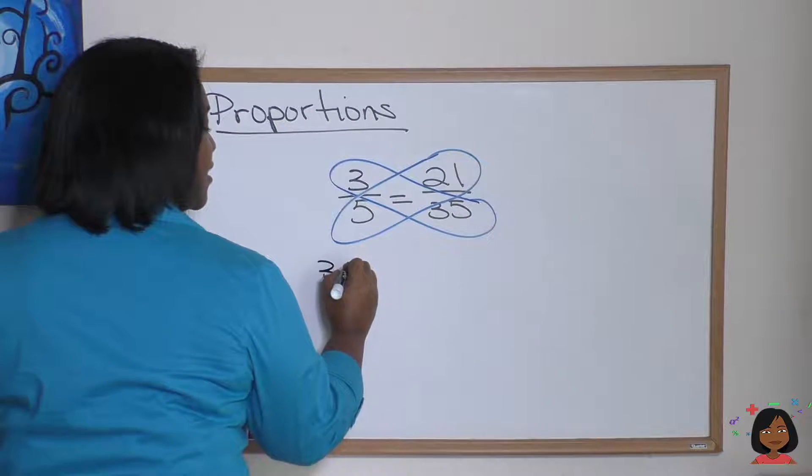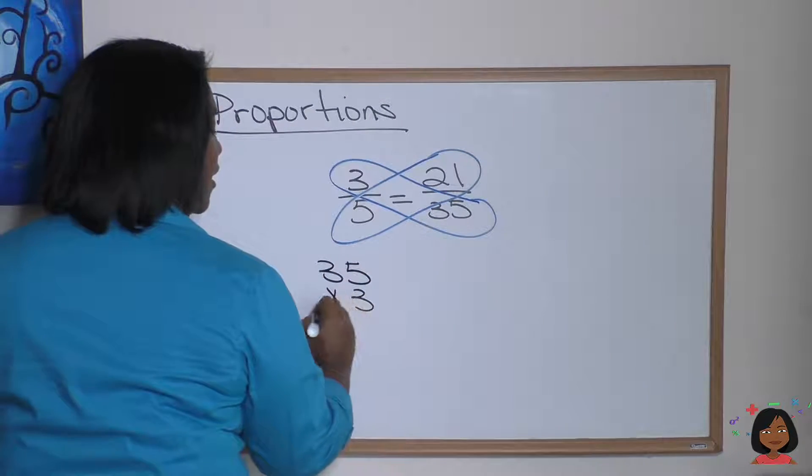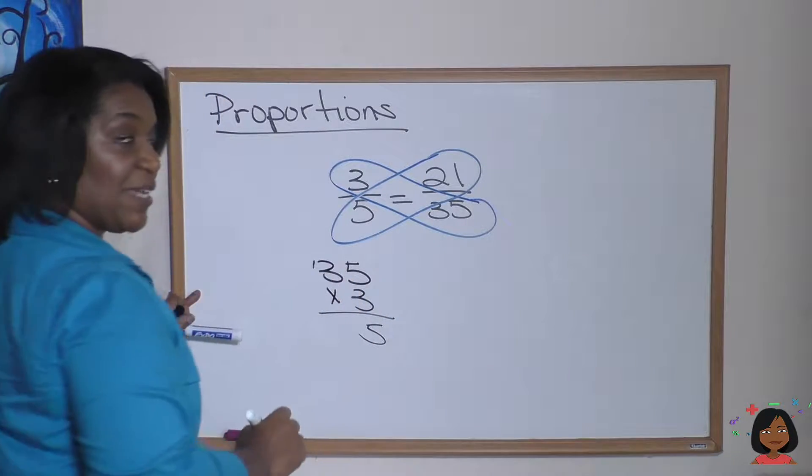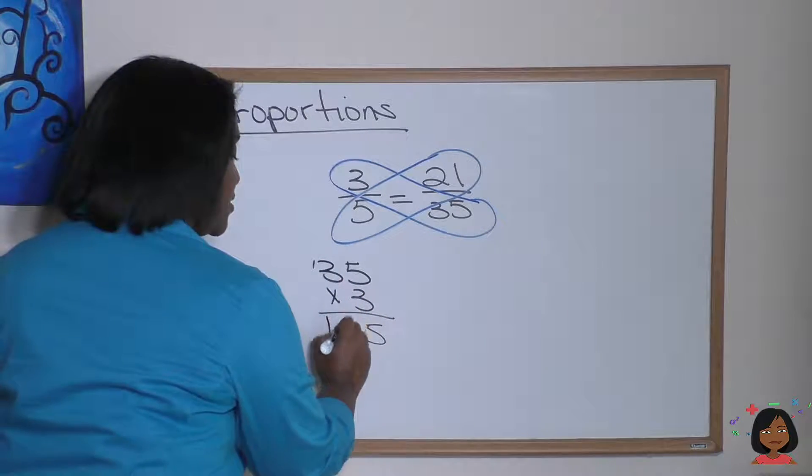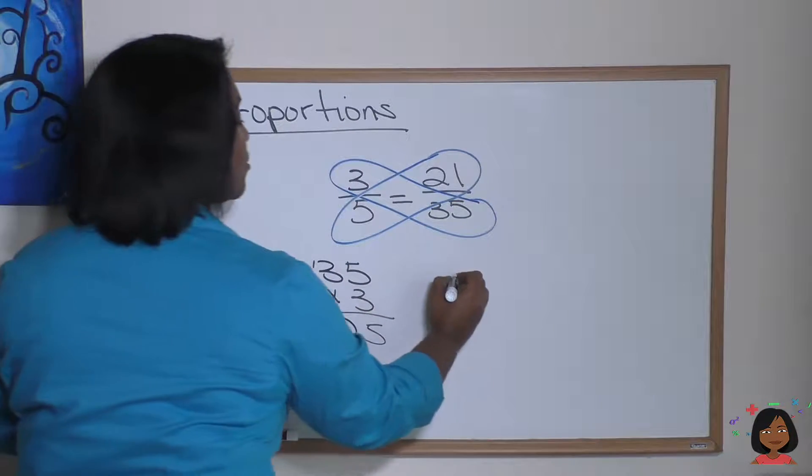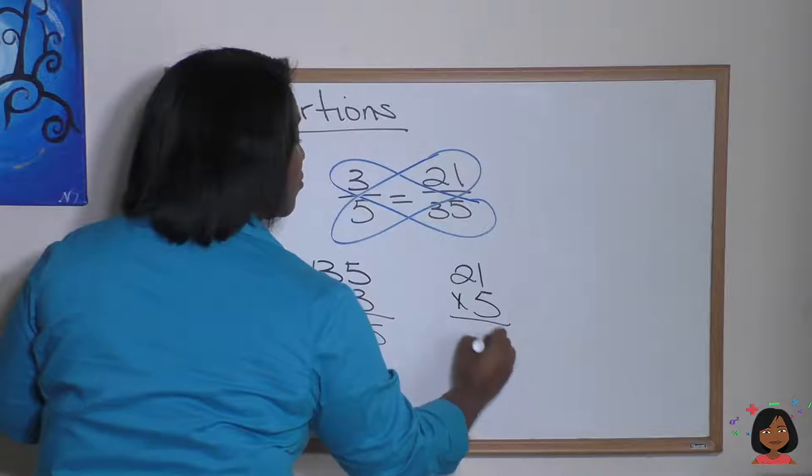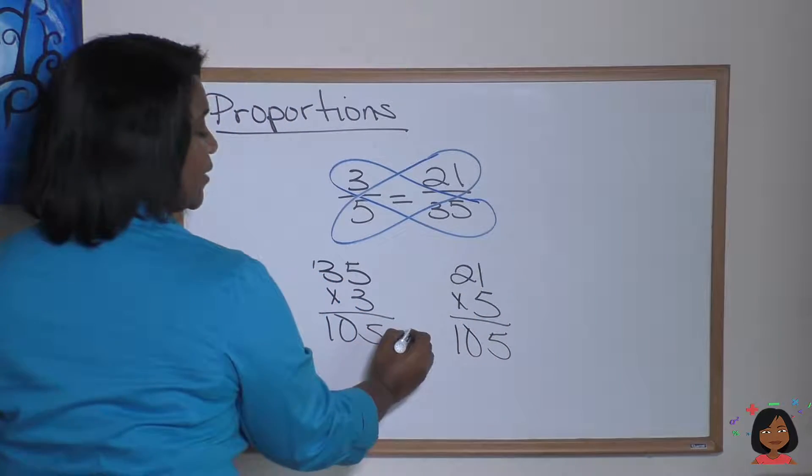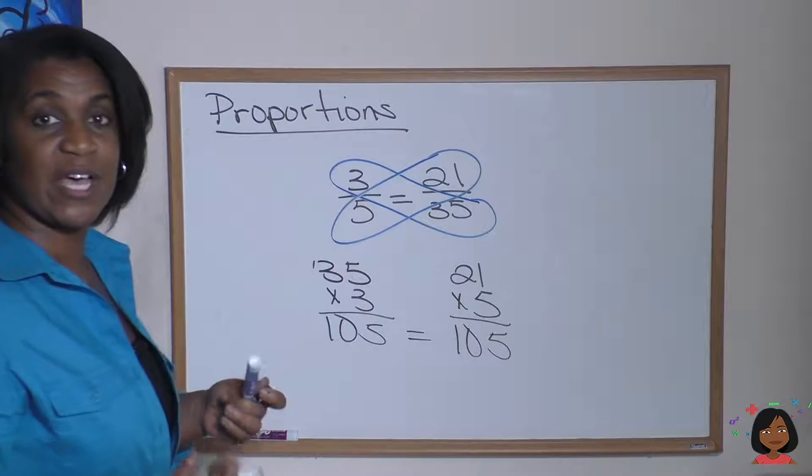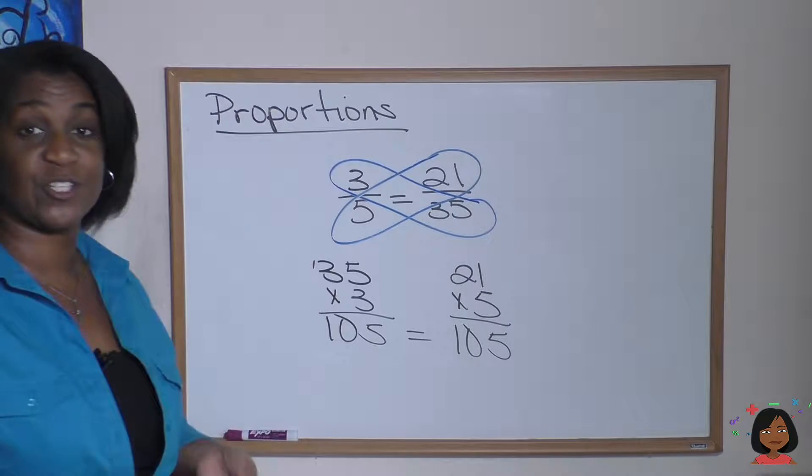35 times 3. 5 times 3 is 15. 3 times 3 is 9. And 1 is 10. So one side equals 105. Now over here, let's do 21 times 5. 5 times 1 is 5. 5 times 2 is 10. Look at that. 105 equals 105. So this is a correct proportion.